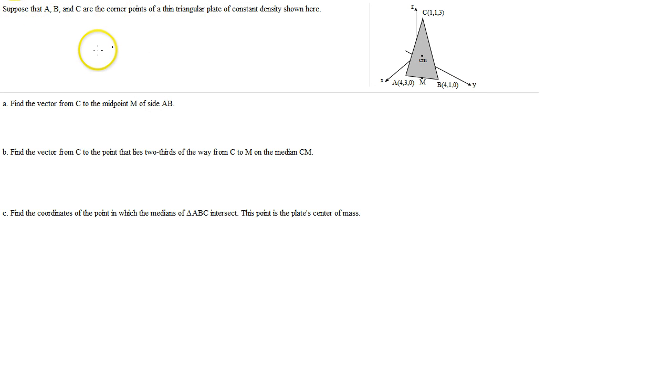Okay, we have this triangle, and we're asked to find the vector from C to the midpoint M of side AB.